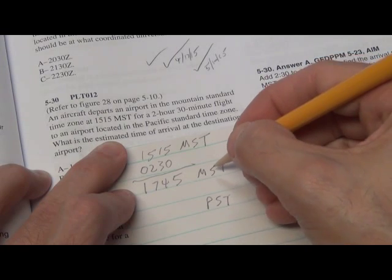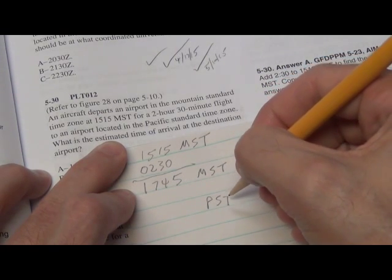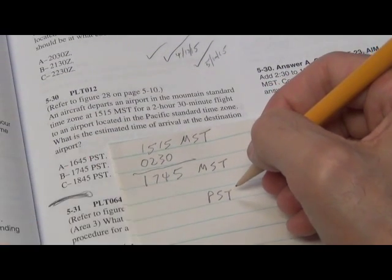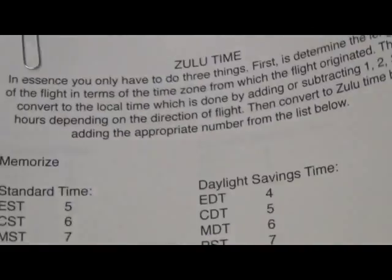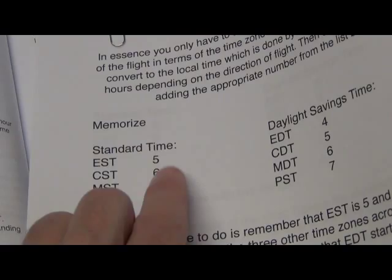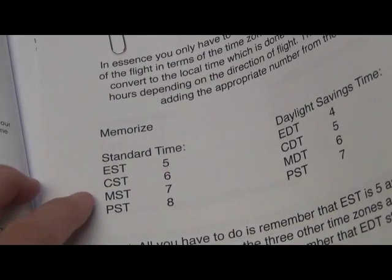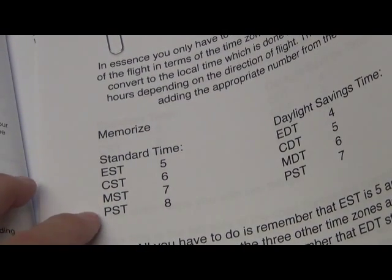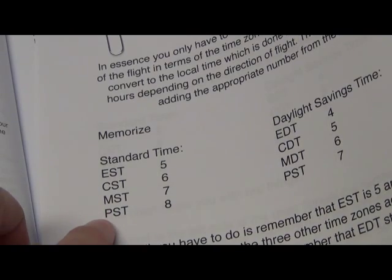So how do we convert from 1745 Mountain Standard Time to Pacific Standard Time? Well, you should know by now that Mountain Standard Time is 1 hour to the west of Pacific Standard Time. But if you don't remember it, you look at your trusty chart. You see Mountain Standard Time is here. Forget about these numbers to the right. Mountain Standard Time is here. Pacific Standard Time is 1 hour away.